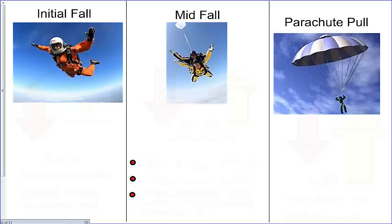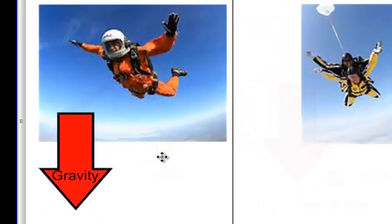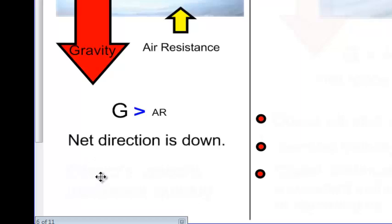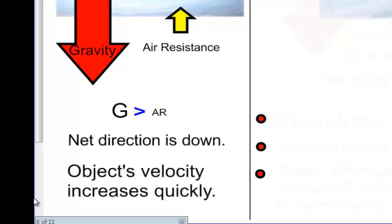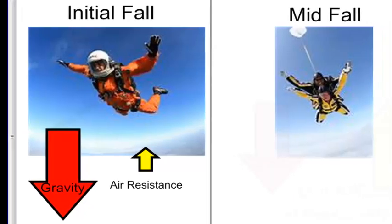We're going to discuss a little bit more about the skydiver and the speed of a falling object — how it increases and how air resistance in turn increases as well. If we look at the initial fall of the skydiver, we see that gravity is pulling the skydiver down and air resistance is going to be low. Gravity is greater than air resistance, so the net direction is down, and the object quickly gains velocity, falling faster and faster. As they do that, they encounter more and more air particles, and air resistance affects their fall.